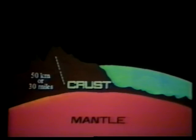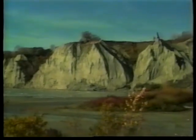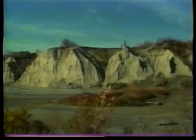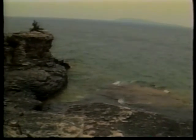Above the mantle is the crust — the outermost and thinnest layer. The crust may be as thick as 50 kilometers or 30 miles, and as thin as 4 kilometers or 2 miles; it is thinnest beneath the oceans. The crust of the Earth is always changing — some changes are sudden and others have occurred over millions of years. The crust is not locked in place but more or less floats on top of the mantle.